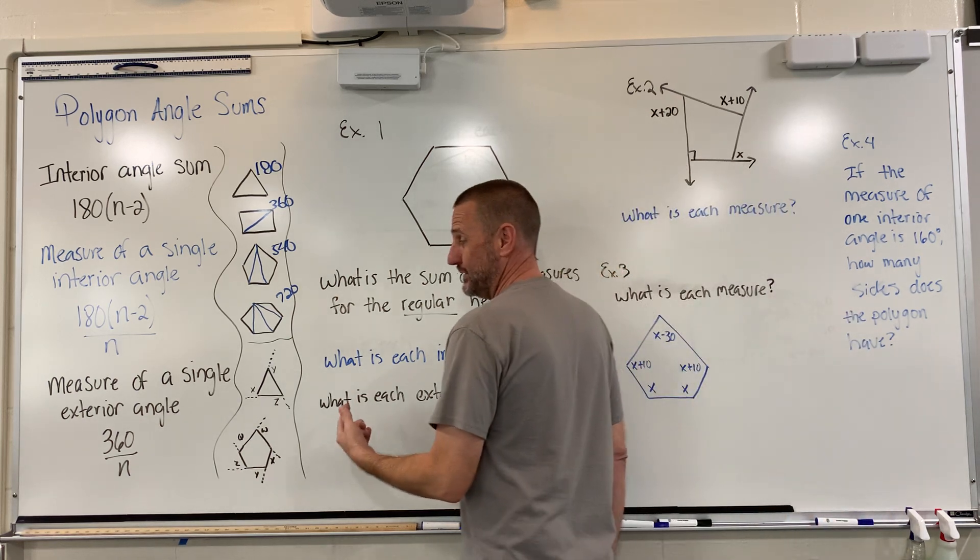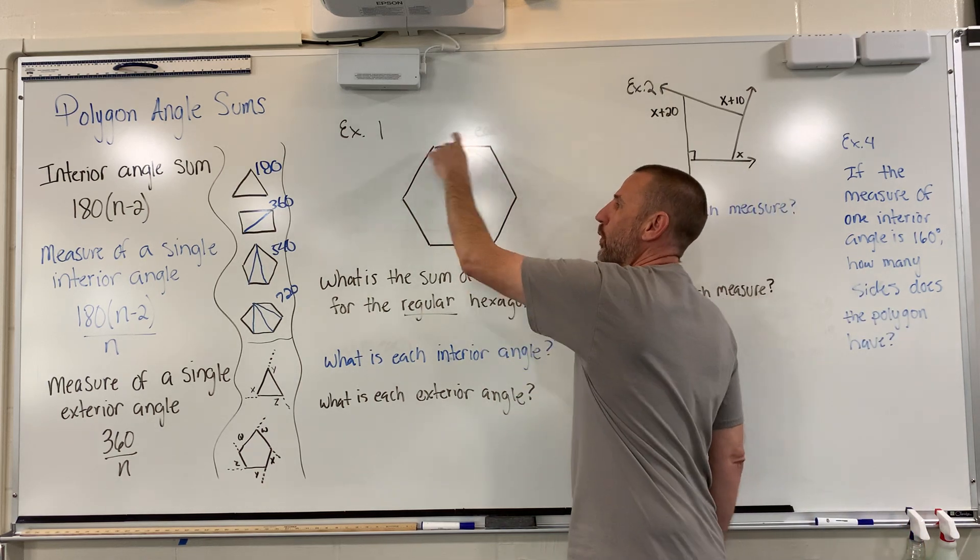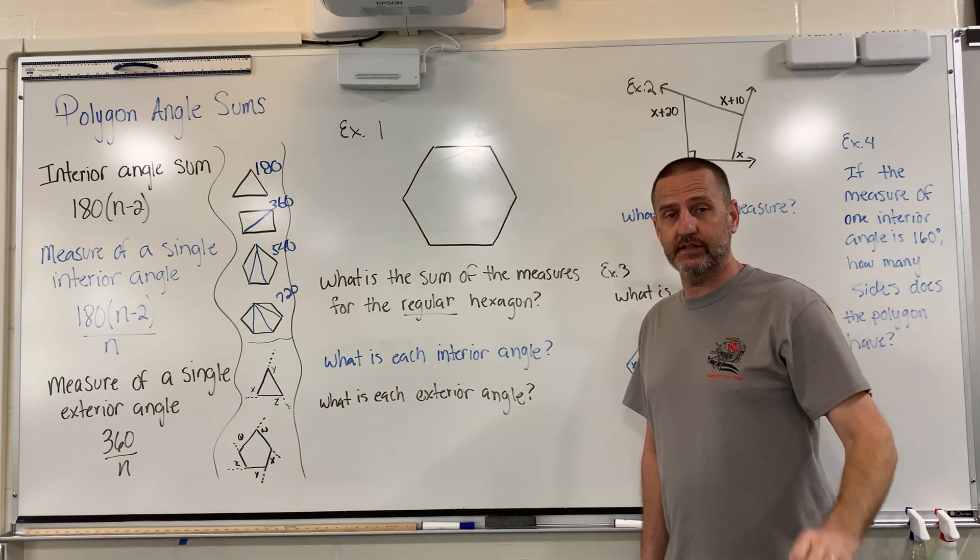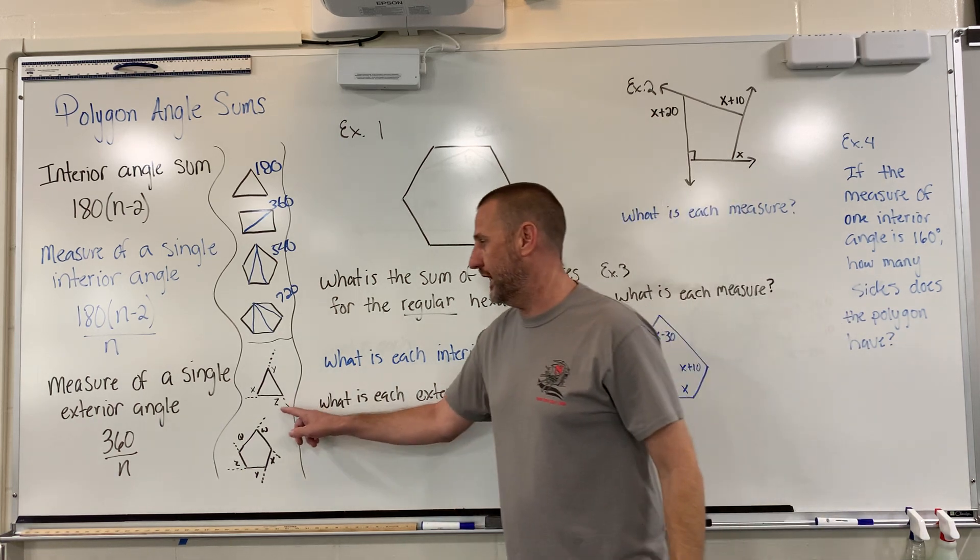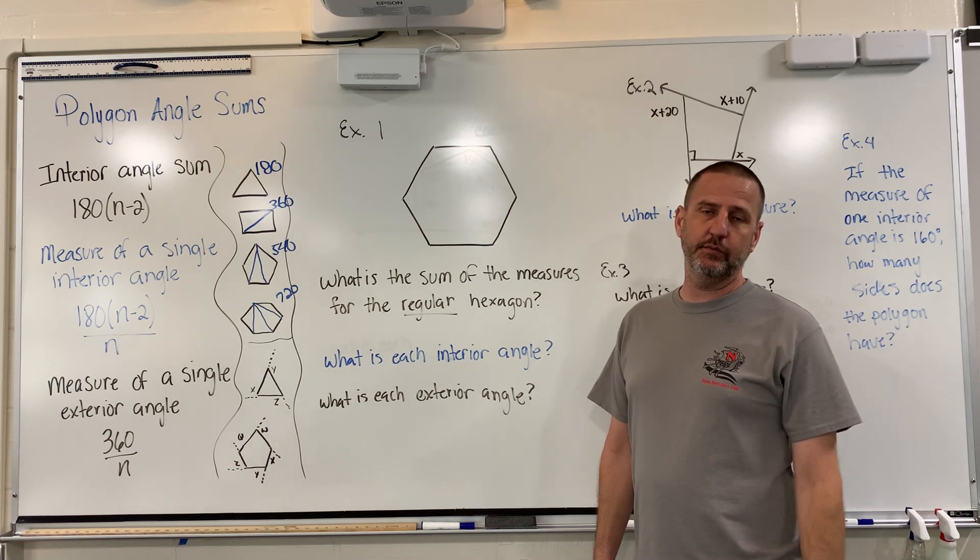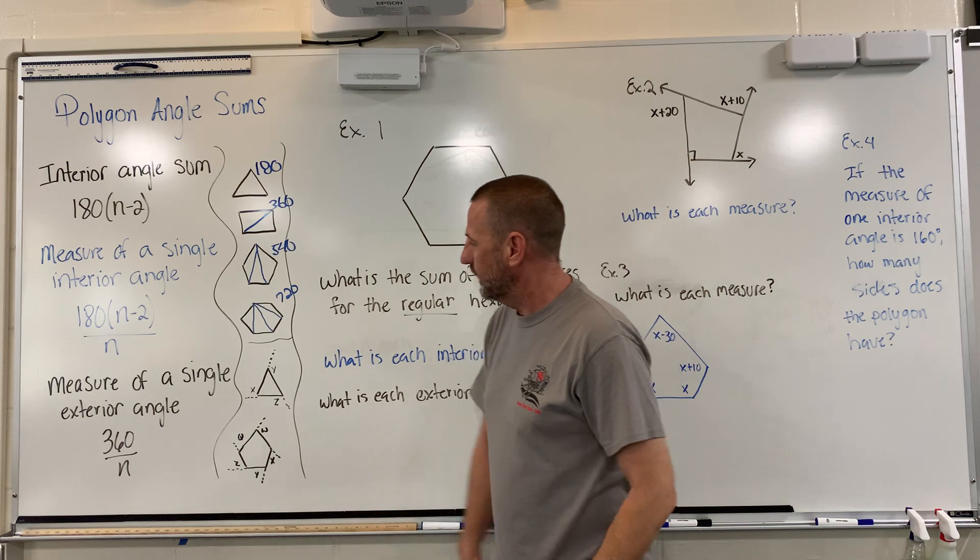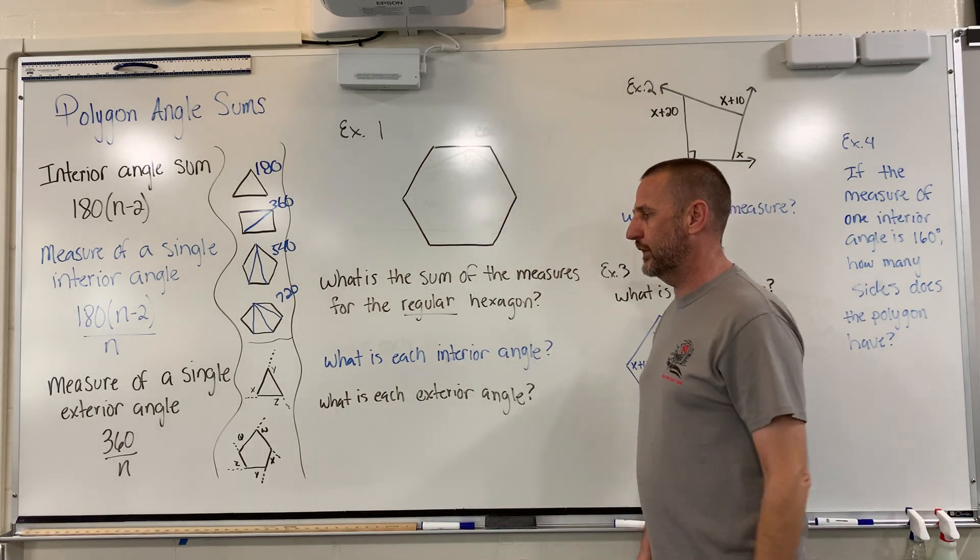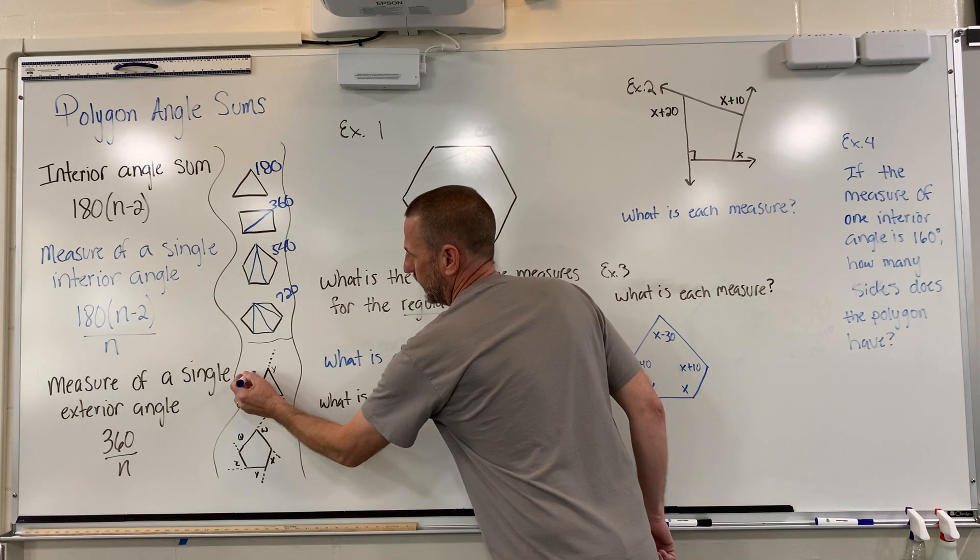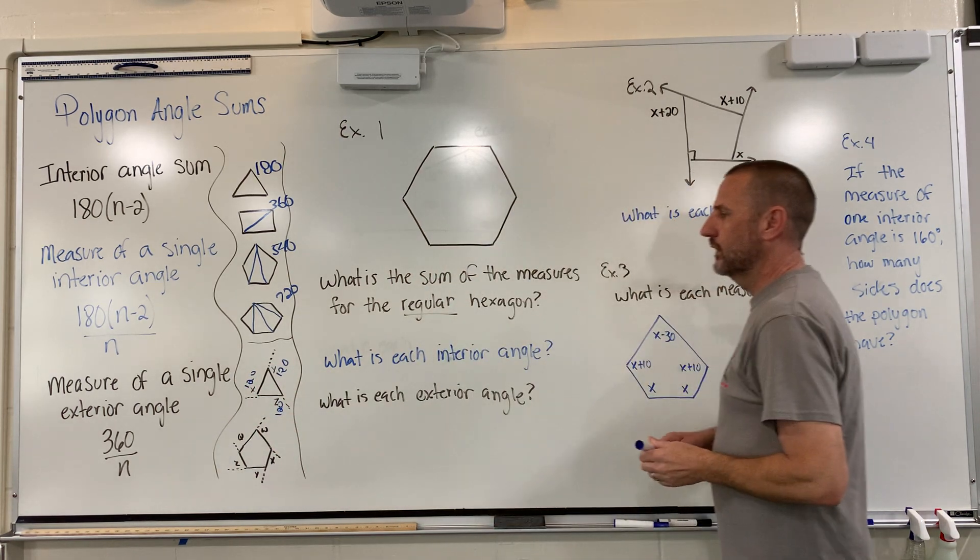As for the exterior, this one's a little bit easier to figure out, because all shapes, no matter what they are, all shapes have an exterior of 360. So, if I want one angle, all I've got to do is divide by the number of sides into 360. So, in this case, it would be, for a triangle, if I take 360 and divide by 3, each of the angles on the outside would be 120, 120, and 120.